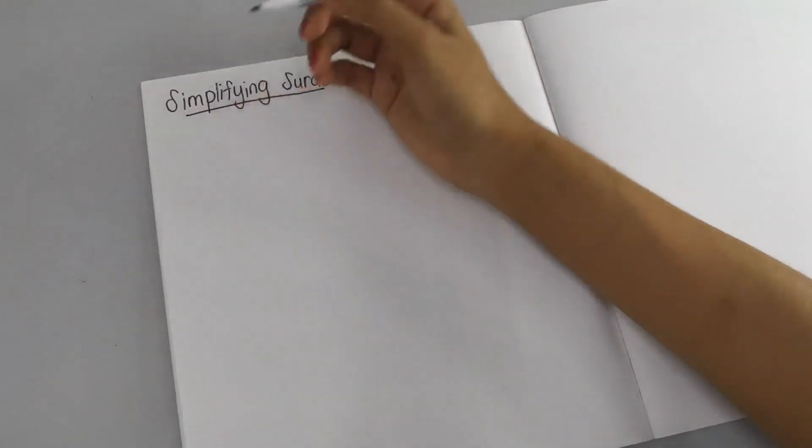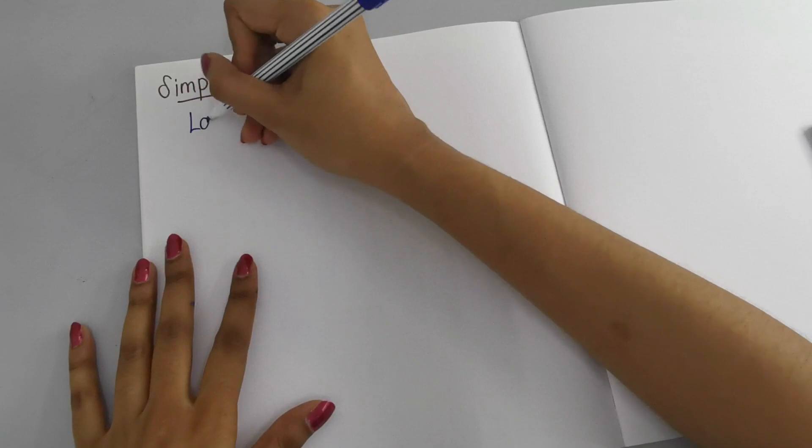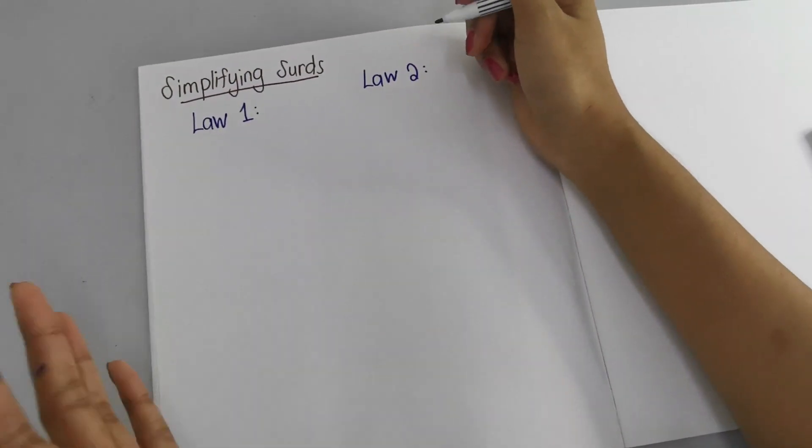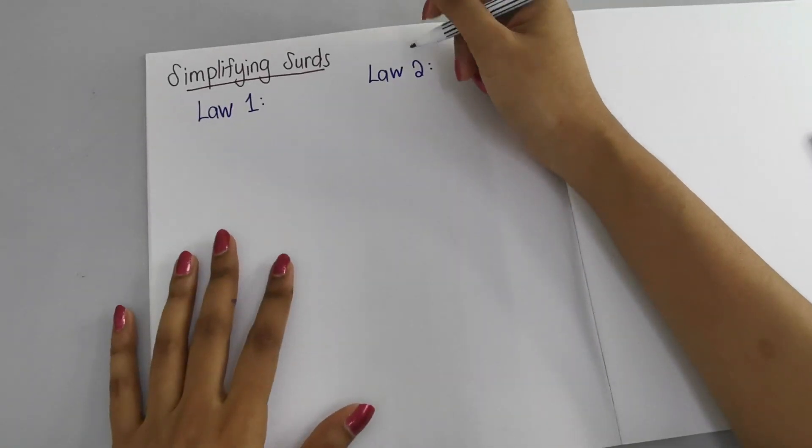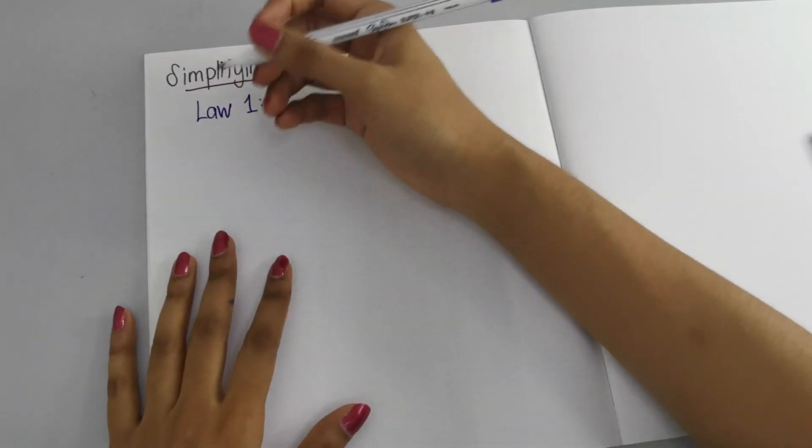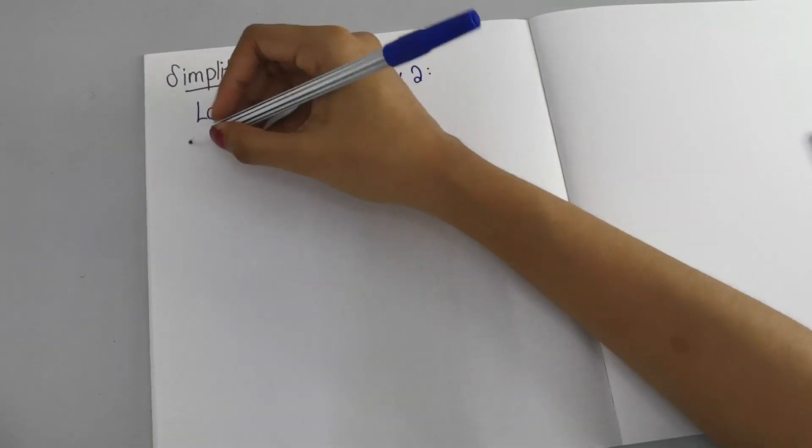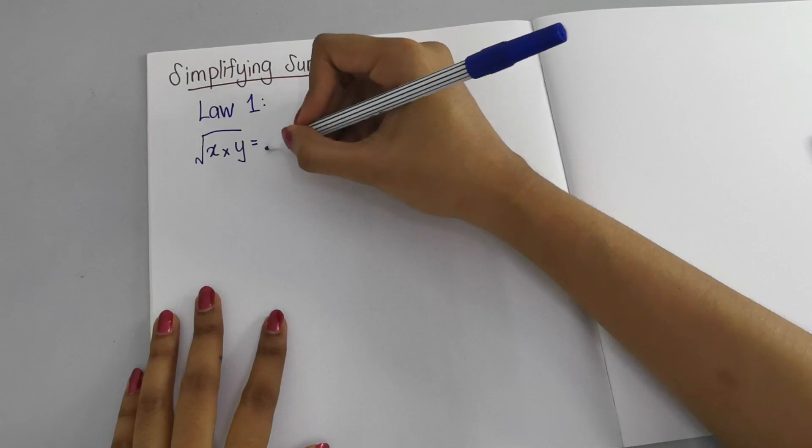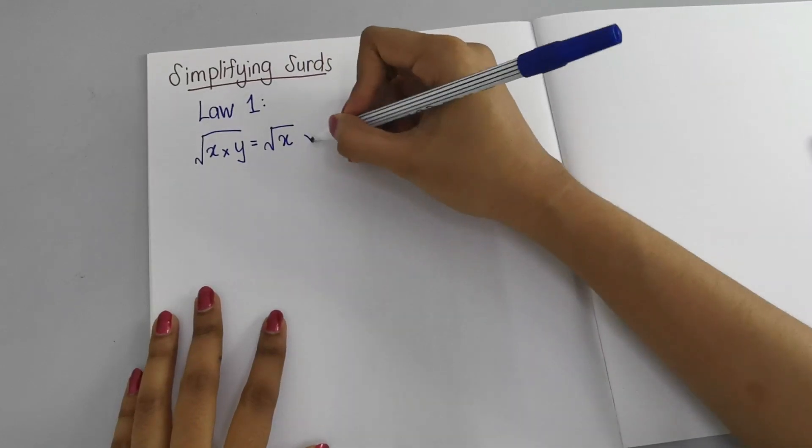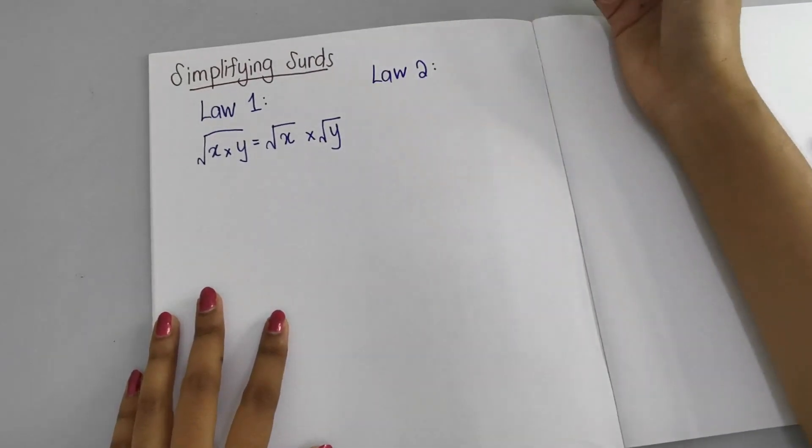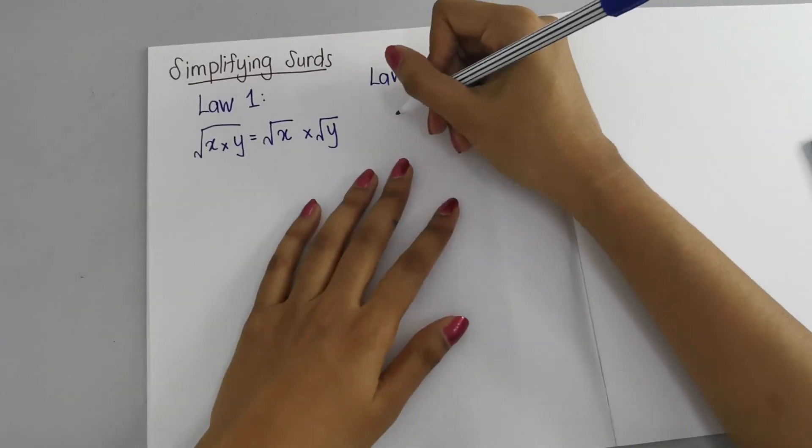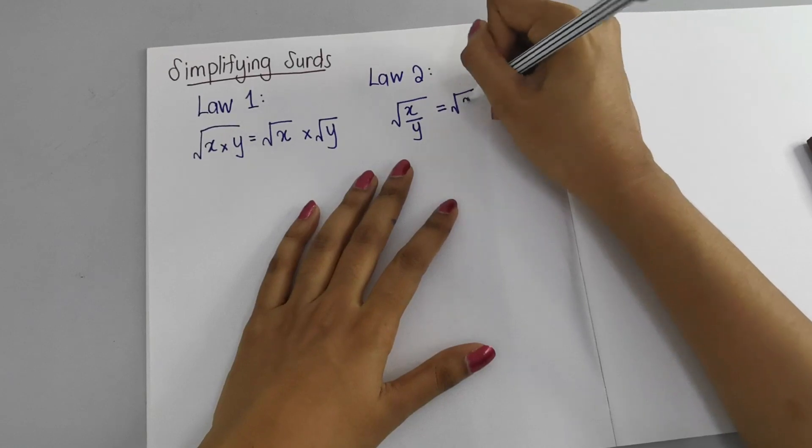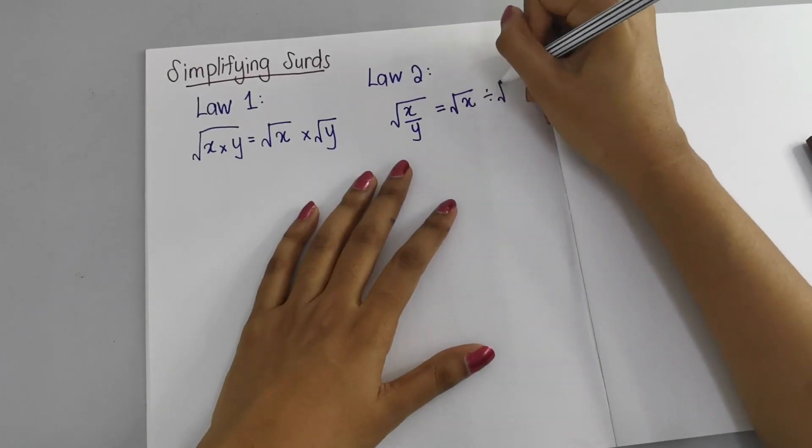Now simplifying surds, you need to know two laws: law one and law two. The first law is if you have √(x×y), you can separate it as √x × √y. If you have √(x/y), you can write it as √x ÷ √y.